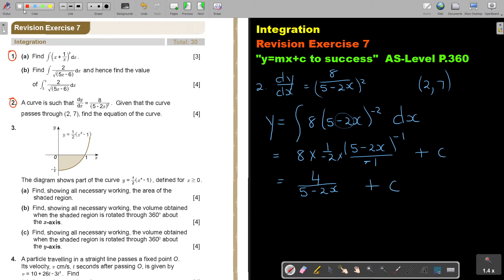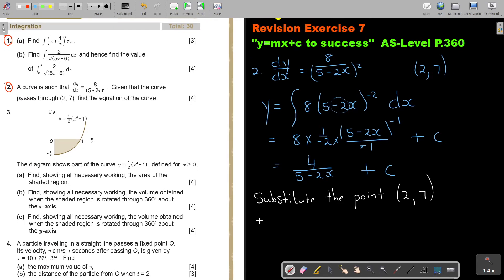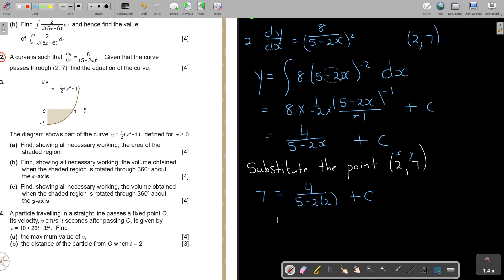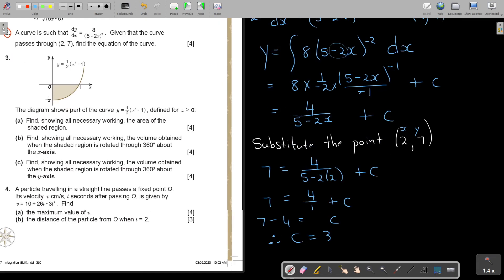And now I'm going to substitute the point (2, 7). So if I substitute, in the place of y, remember, this is x, this is y. So in the place of y, I put a 7. And then in the place of x, I put a 2. And I just simplify this. 7. Let's just simplify. So it's 4. 5 minus 4, it's just going to be 1. Do you see that? So the value of C is 7 minus 4. So therefore, the value of C is 3.